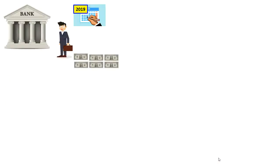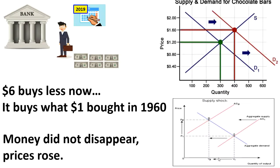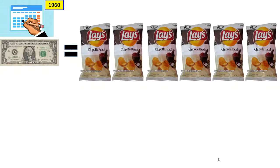Yes, you do get six dollars back, but six dollars buys less now — it buys what one dollar bought in 1960. The money didn't disappear; prices rose because supply dropped or demand increased because the government printed more money. When people have more money, they spend more, which drives demand up, and when demand goes up, so do prices. That's really what inflation is — the general increase of prices over time, created by printing more money.